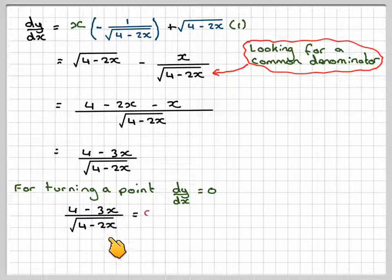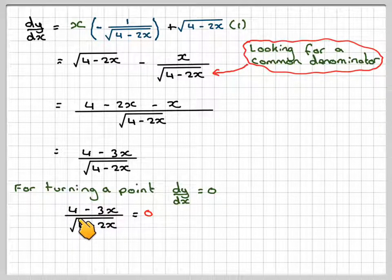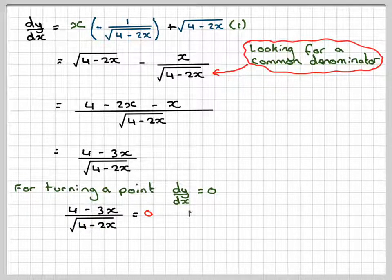4 minus 3x over root of 4 minus 2x is equal to 0. Now, this bit here, the bottom bit of the denominator, cannot be equal to 0. Otherwise, it won't exist.